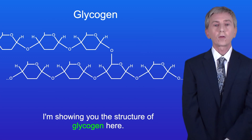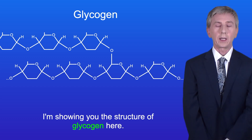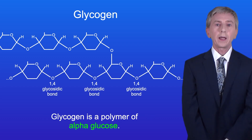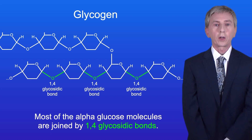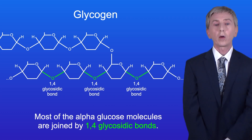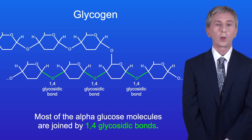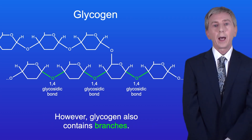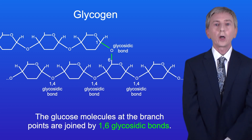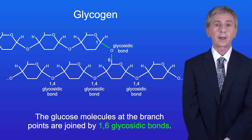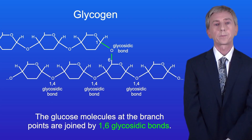I'm showing you the structure of glycogen here. Glycogen is a polymer of alpha glucose. Most of the alpha glucose molecules are joined by 1,4 glycosidic bonds. However glycogen also contains branches, and the glucose molecules at the branch points are joined by 1,6 glycosidic bonds.